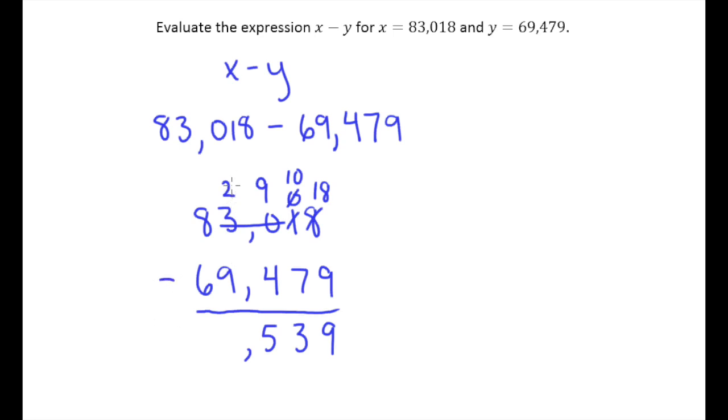2 minus 9 can't do that because 2 is less than 9 so we'll borrow 1 from the 10,000s place, making that a 7. Turn my 2 into a 12. 12 minus 9 is 3, 7 minus 6 is 1. So this expression x minus y evaluated for x equals 83,018 and y equals 69,479 is this number 13,539.